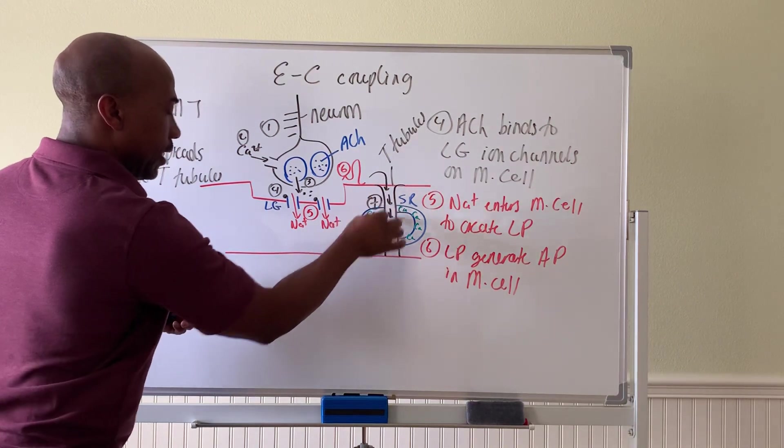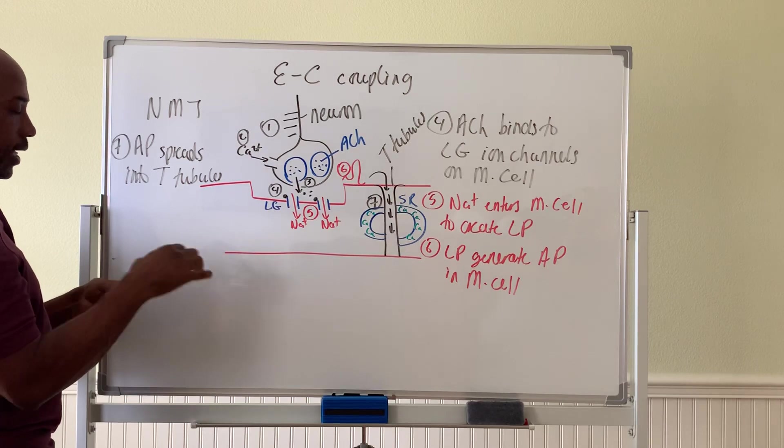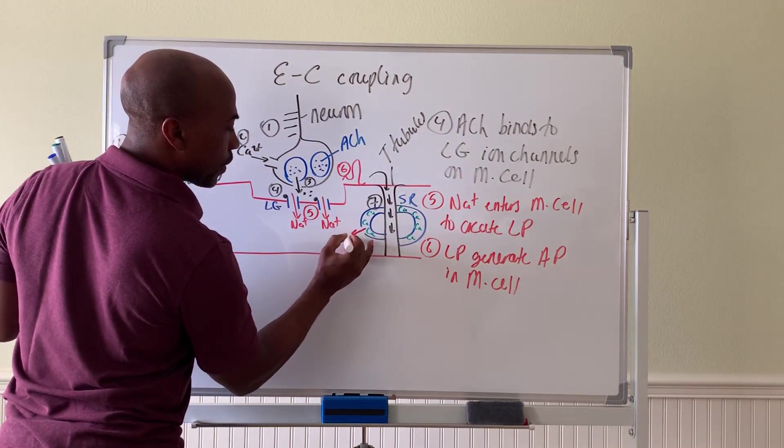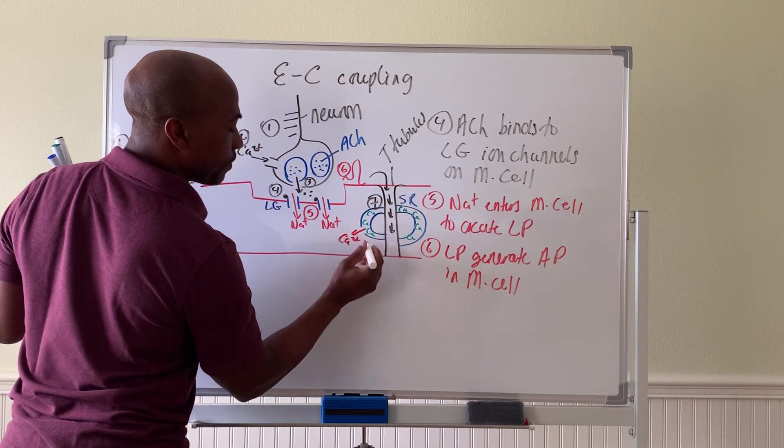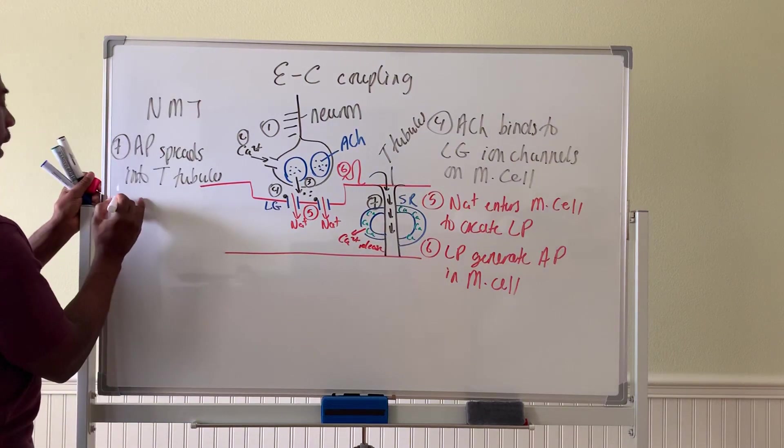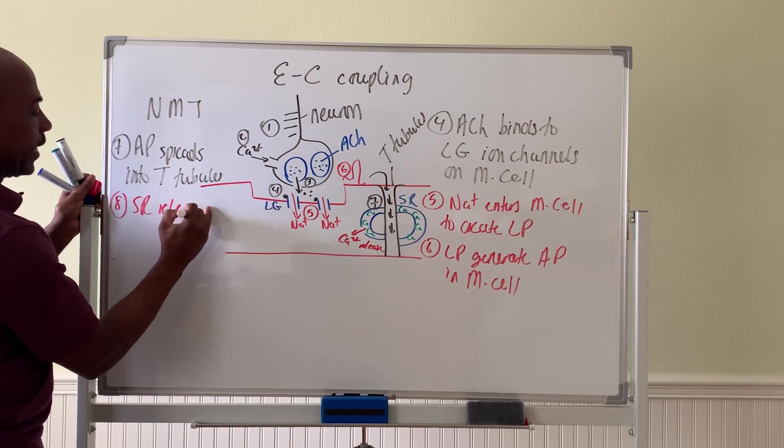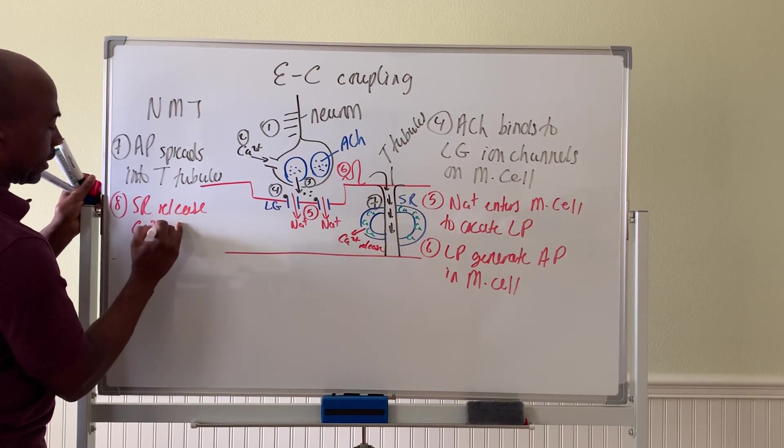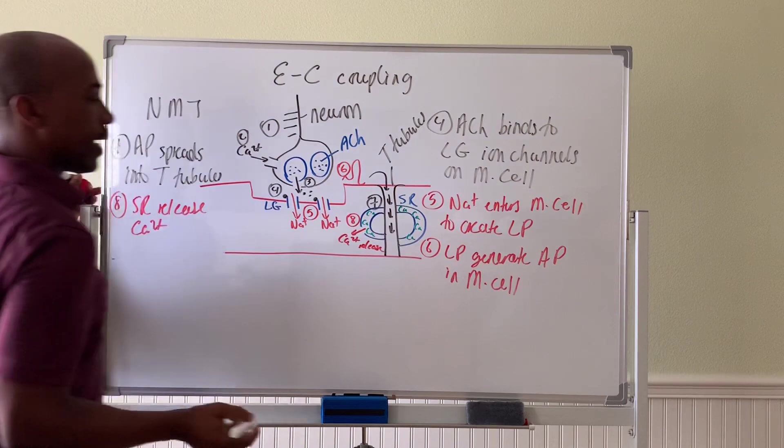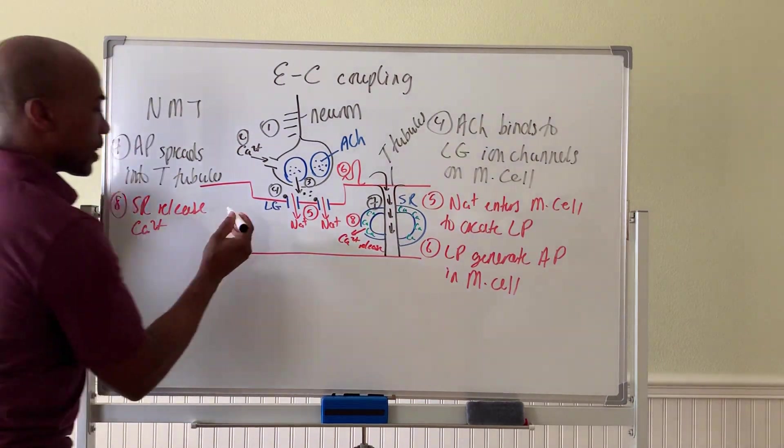And so when the electricity comes through here, it will open up gates on the SR to release calcium. So step seven, the electricity comes through. And then step eight, calcium is released from the SR to enter the cell. Calcium release. So step eight is SR will release calcium.